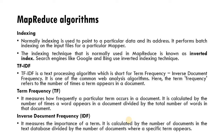The fourth algorithm is TF-IDF, which stands for Term Frequency and Inverse Document Frequency. It is a text processing algorithm and one of the common web analysis algorithms. Term frequency refers to the number of times a term appears in a document. To find a particular term, we check how many times it is repeated in the whole document. TF-IDF is a combination of term frequency and inverse document frequency. Term frequency measures how frequently a particular term occurs in a document.